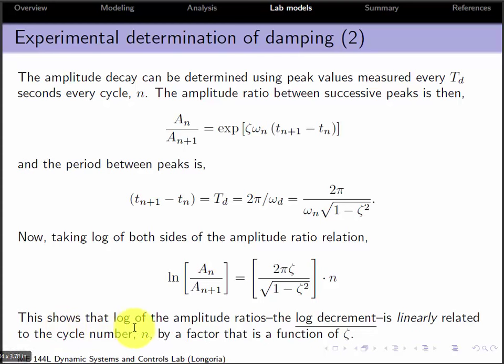Stated here, this shows that the log of the amplitude ratios, what we call the log decrement, is linearly related to the cycle number by a factor that's simply a function of ζ.